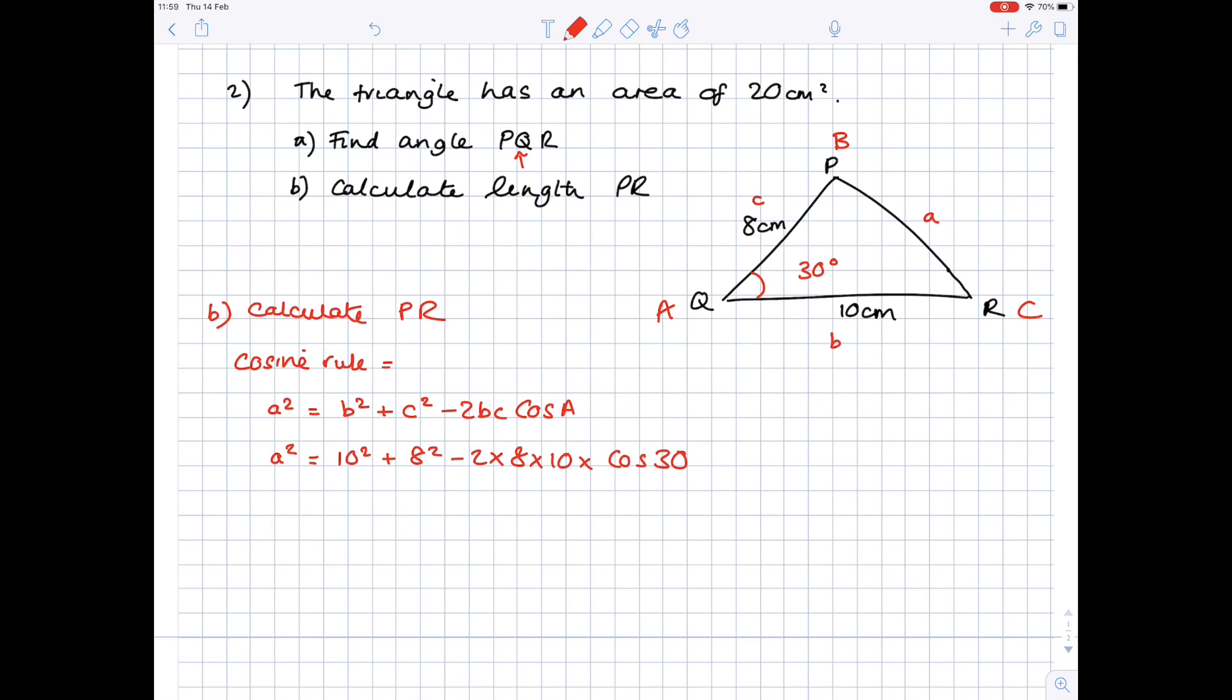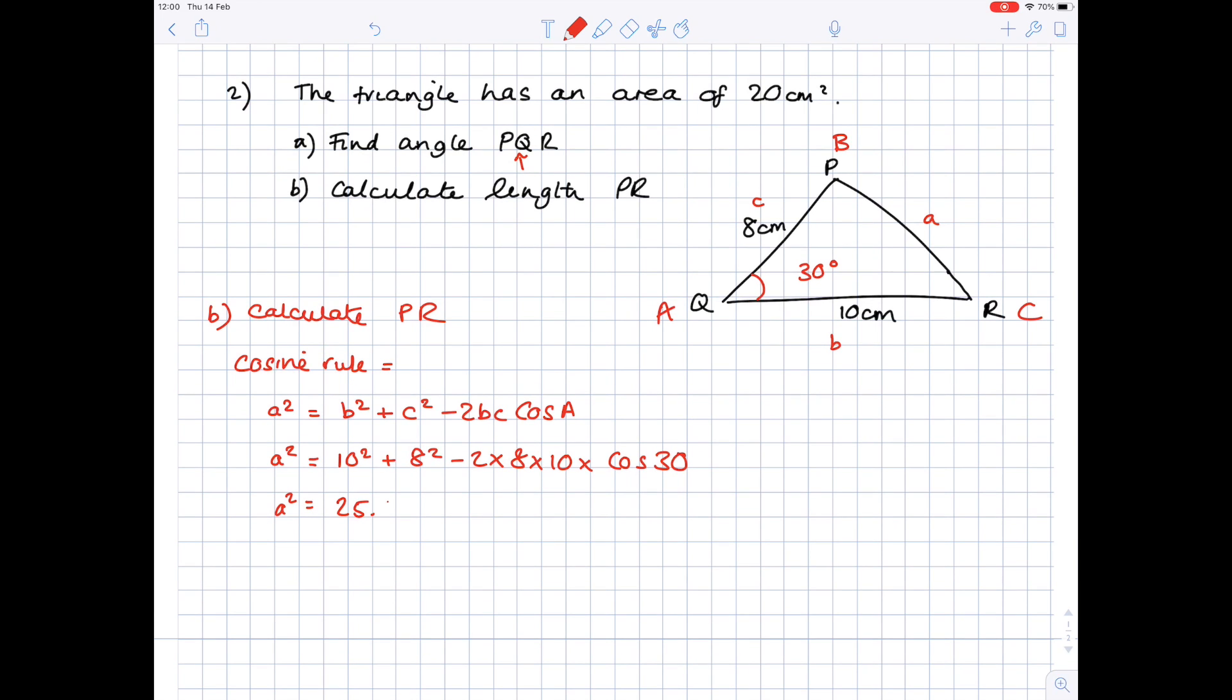And really you can just put everything on the right hand side of that equals sign straight into your calculator. And once you pop that into your calculator, you'll get a value which is A squared equals 25.4359 blah, blah, blah. Square root that in order to get A by itself. And you'll get a value which is 5.04 centimeters to three significant figures.